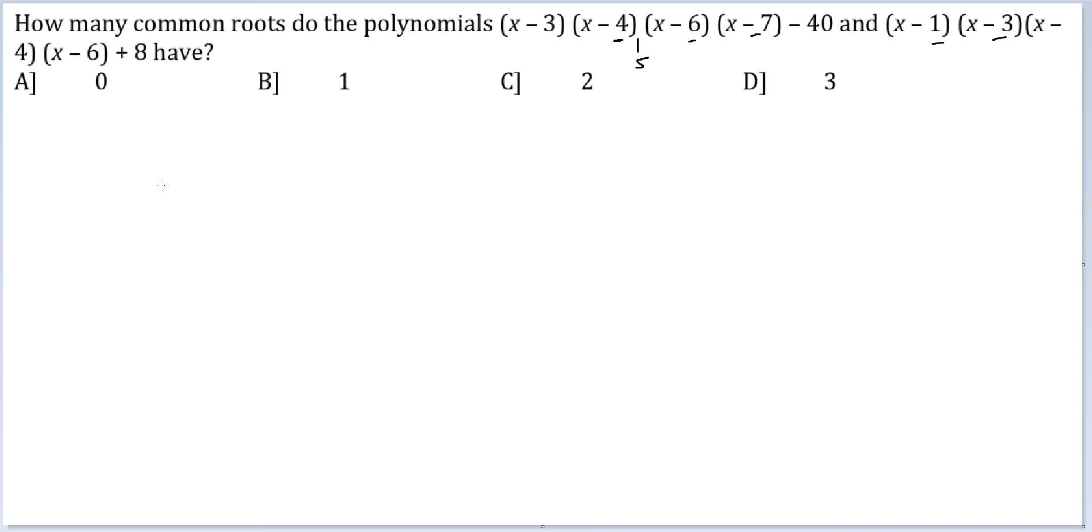And you have 1, 3, 4 and 6, middle point is 3.5. So what I can do is, I can make pairs across this point. So if I make a pair of (x-4) into (x-6) and (x-3) into (x-7), that should be useful.